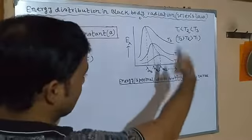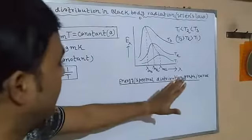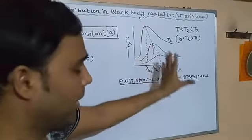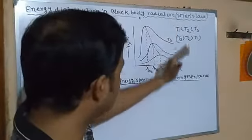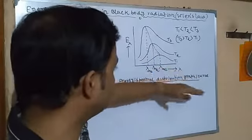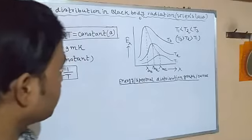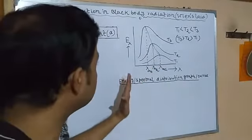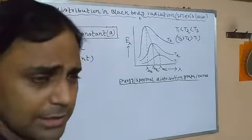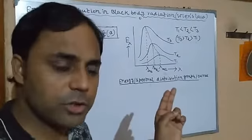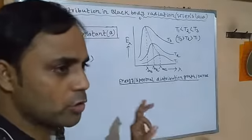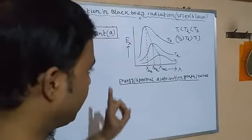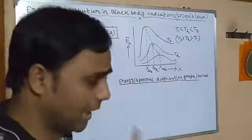First, you can see that three temperatures have been shown. As we go in the upward direction, temperature increases — T1 is minimum, then T2, then T3. With the rise of temperature, the area of the curve increases, which clearly shows that the intensity of radiant heat energy increases. This clearly supports Stefan's law: E proportional to T to the fourth power.